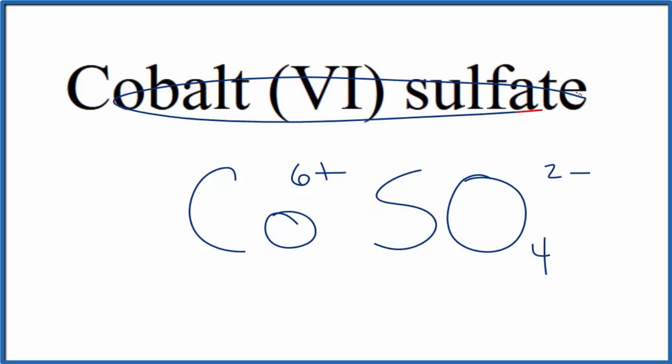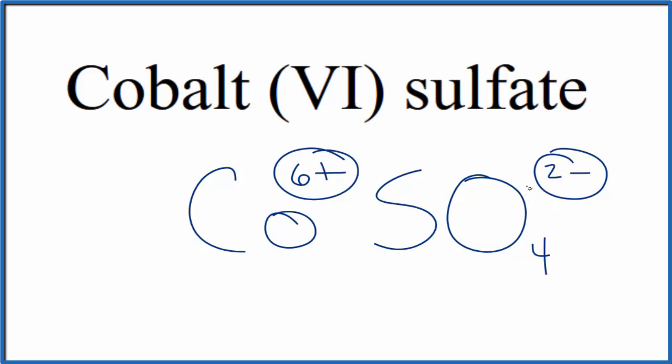Since cobalt (VI) sulfate is neutral—it doesn't say ion after it—these charges need to add up to zero. We need a net charge of zero.